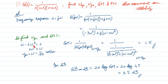To find the phase crossover frequency, I equate the imaginary part to zero — because the polar plot cuts the negative real axis there. When I equate the imaginary part to zero and bring 2ω³ to the right side, the ω terms cancel, giving ω_pc = 1/√2. The frequency obtained by equating the imaginary part to zero is the phase crossover frequency.